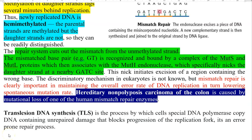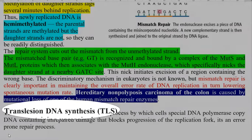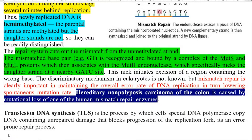Another form of repair system is translesion DNA synthesis. It is a process by which the cell's special DNA polymerase copies DNA containing unrepaired damage that normally blocks the progression of the replication fork. It is an error-prone repair process that commonly operates in the cell.